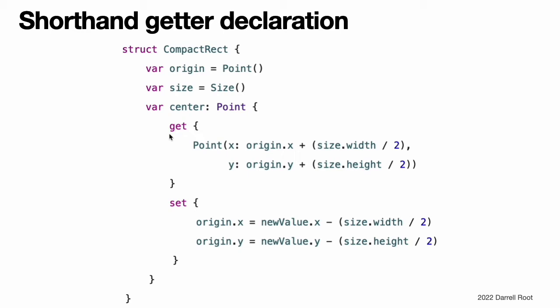Shorthand getter declaration: if the entire body of a getter is a single expression, the getter implicitly returns that expression. This is another version of the Rect structure that takes advantage of this shorthand notation and the shorthand notation for setter. Omitting the return from a getter follows the same rules as omitting return from a function, as described in functions with an implicit return.